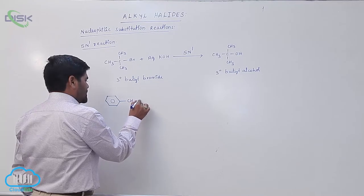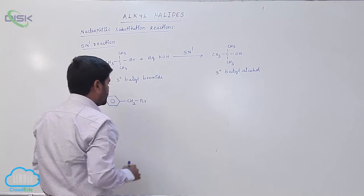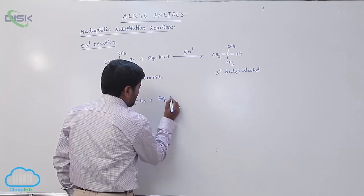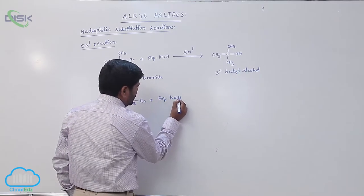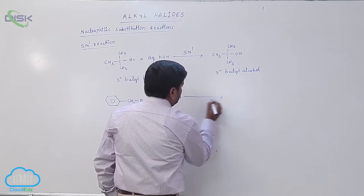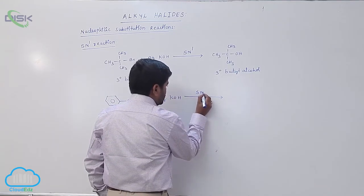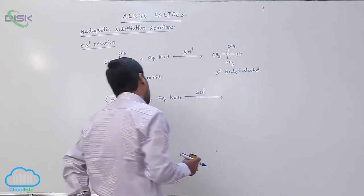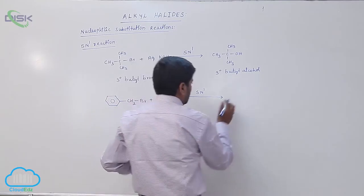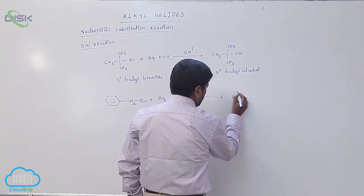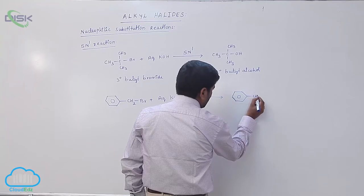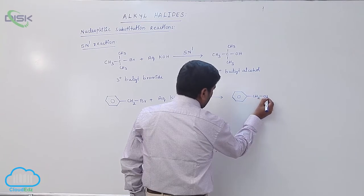This is benzyl bromide. It also reacts with aqueous potassium hydroxide. It may proceed via SN1 reaction or SN2 reaction, both cases are possible here, converting into the corresponding alcohol.